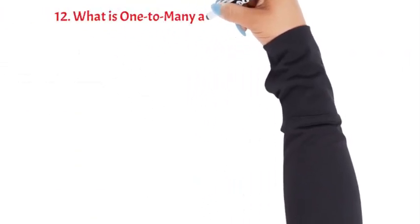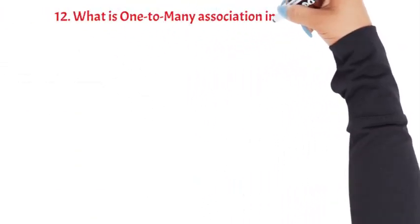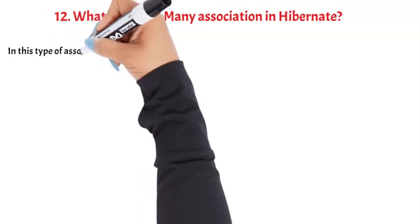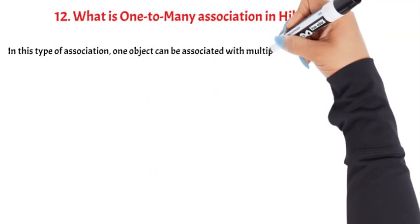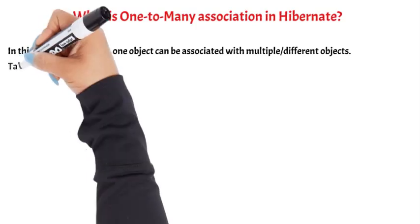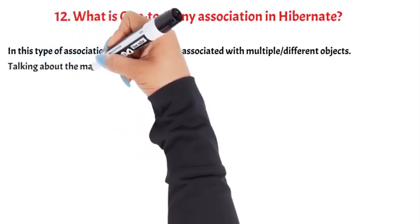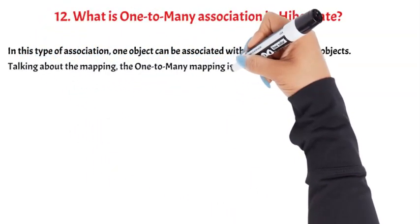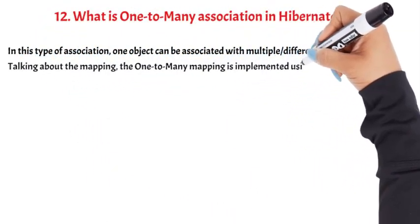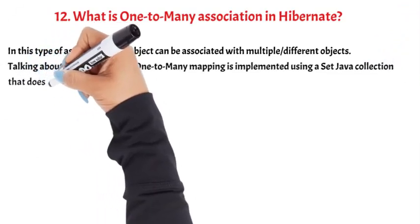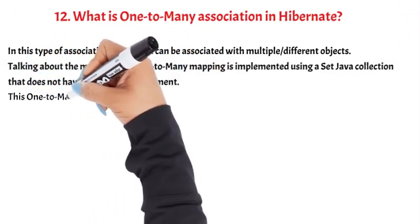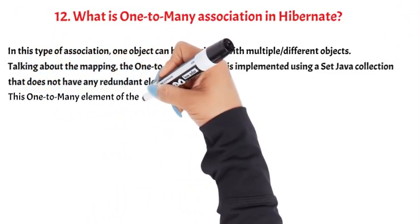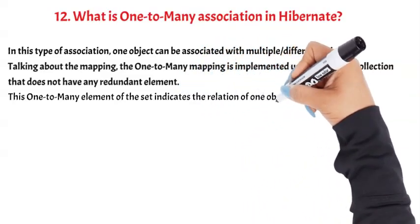Question 12: What is 1-to-many association in Hibernate? In this type of association, one object can be associated with multiple different objects. The 1-to-many mapping is implemented using a Set Java collection that does not contain any redundant element. This 1-to-many element of the set indicates the relation of one object to multiple objects.